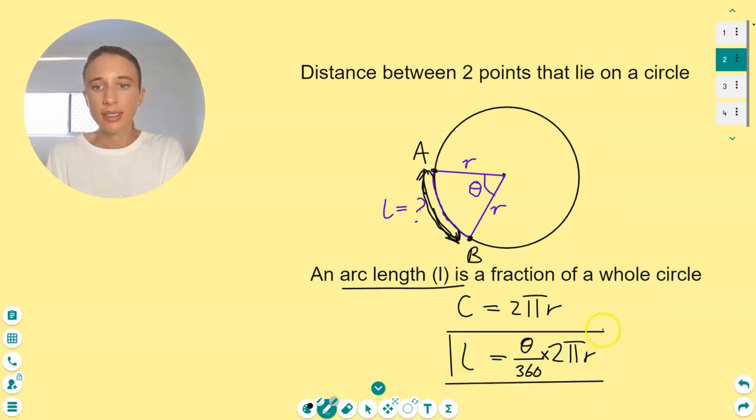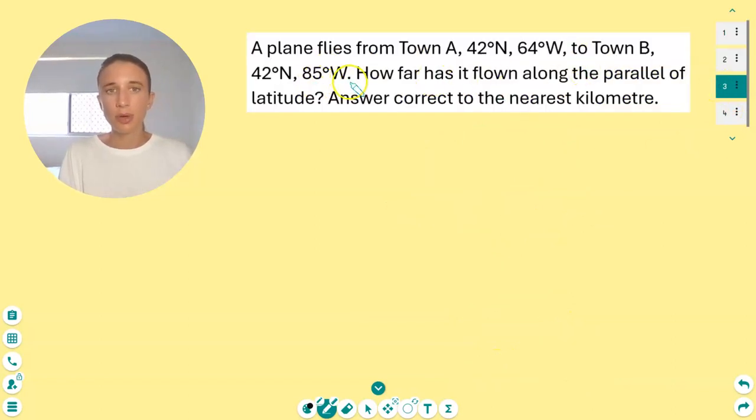Okay, so we're going to come back to that soon. Now let's look at the problem. So it says a plane flies from town A, 42 degrees north, 64 degrees west, to town B, 42 degrees north, 85 degrees west. How far has it flown along the parallel of latitude?